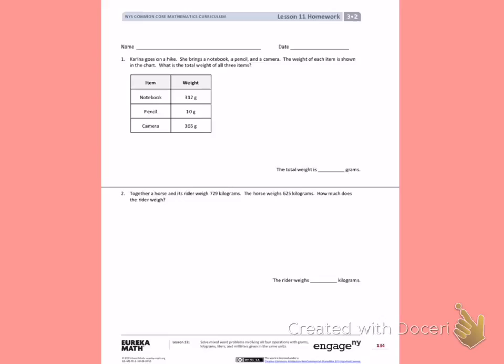Here I see the word total. I need to find the total of each item she brought. The first thing I want to do is create a picture. I don't know what the total is, but I know she brought a notebook that was 312 grams, a pencil that was 10 grams, and a camera that was 365 grams.